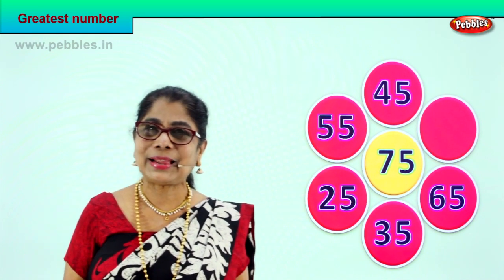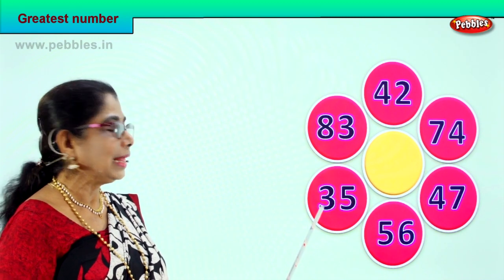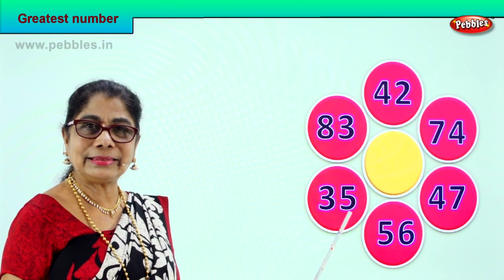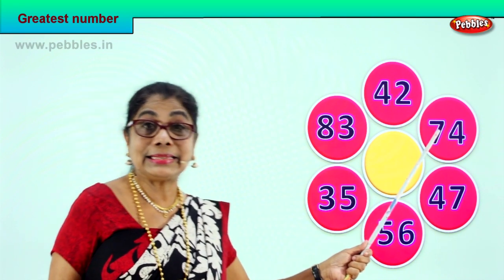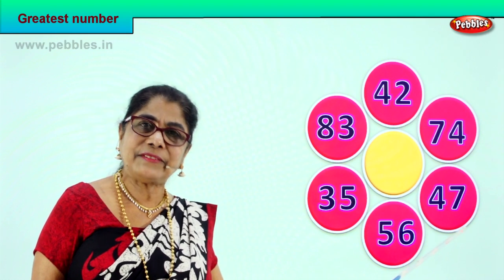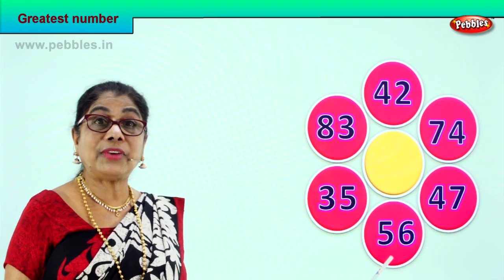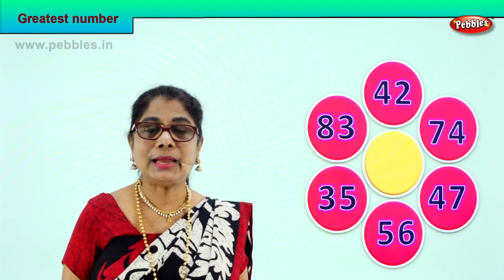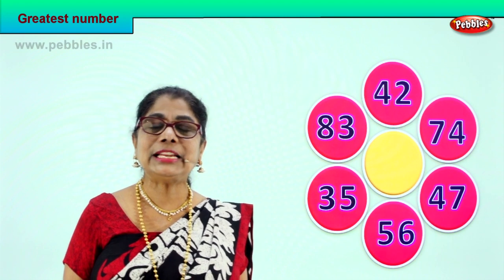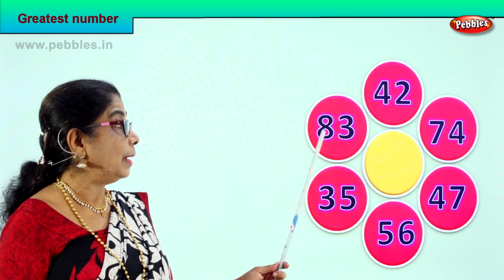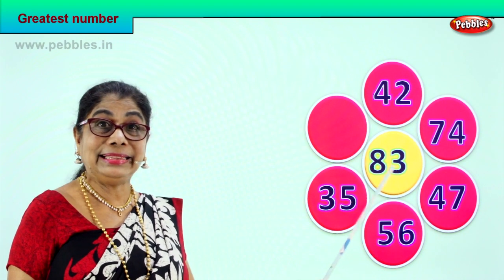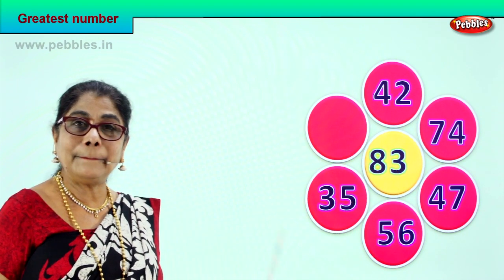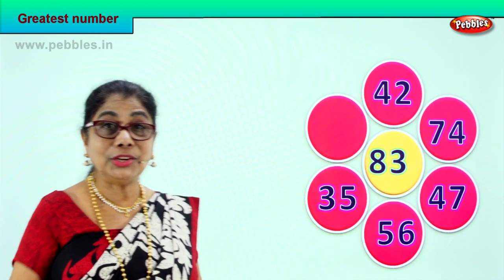Good. Let's take another exercise. 35 has 3 tens. 83 has 8 tens. 42 has 4 tens. 74 has 7 tens. And 47 has 4 tens. 56 has 5 tens. Among all the 6 numbers, which number has the highest in the tens place? 83 has the highest number of tens in the tens place — that is 8 tens and 3 ones. 83 is the greatest, biggest of all among the 6 numbers. Did you enjoy doing it? Good.